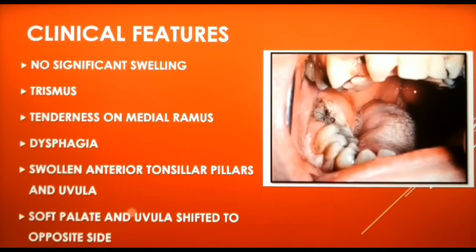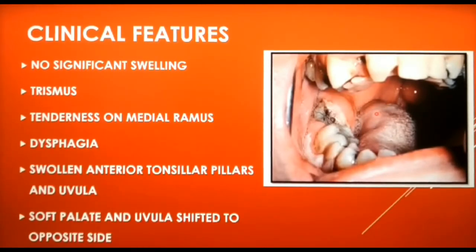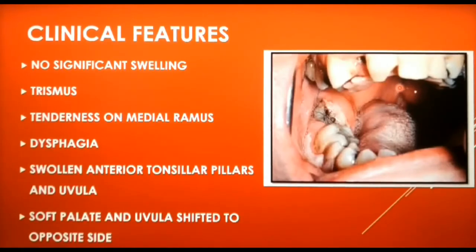Tenderness can be elicited over the swollen area, present medial to the anterior border of the ramus. Dysphagia — meaning difficult swallowing — is present. There is medial displacement of the lateral wall of the pharynx, and redness and edema of the area around the third molar. The midline of the palate is displaced to the unaffected side, the uvula appears swollen, and there is also difficulty in breathing.